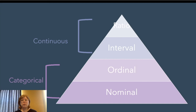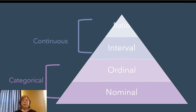With an interval measure, not only can categories be ordered, but they are ordered so that the distance between each category is the same. An example would be years of education. The interval between six years and seven years is the same as the interval between eleven years and twelve years. No matter where you go on the scale, they're equal distances apart.